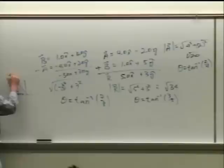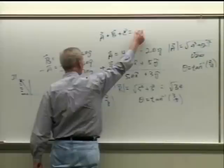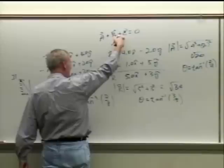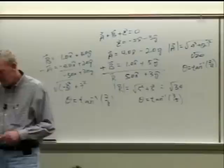The last vector problem asked us to find vector C so that A plus B plus C equals zero. Since A plus B is 5 x-hat plus 3 y-hat, vector C simply equals negative 5 x-hat minus 3 y-hat. It's just testing whether you understand a vector and its components.